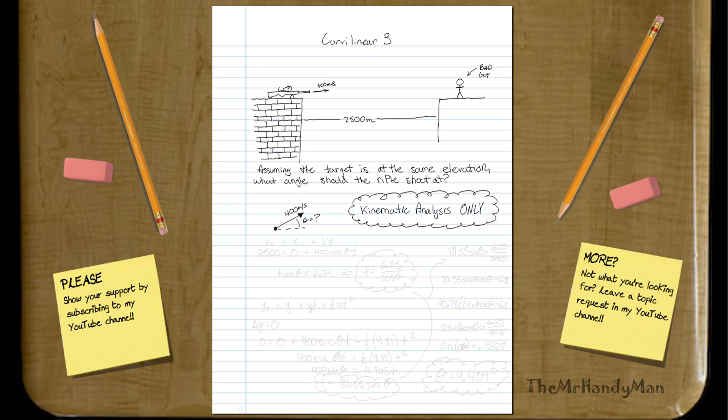This is the third example of curvilinear motion, and what we have here is the longest rifle shot recorded according to the Guinness records, done by a Canadian soldier in Afghanistan at near 2,400 meters. I rounded it off to 2,500 meters, and we're going to do a kinematic analysis on it.